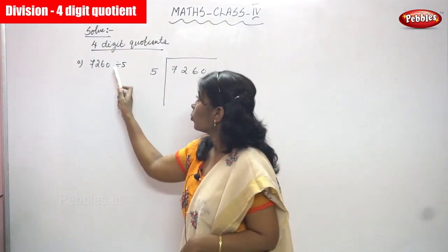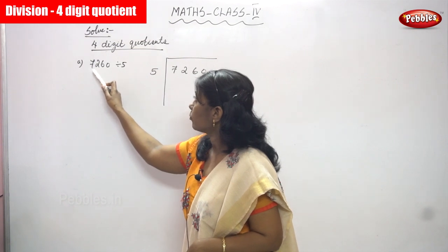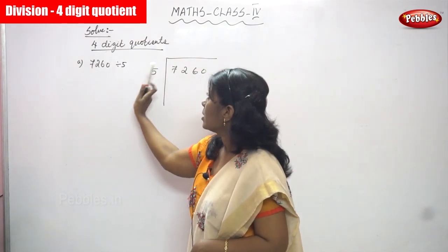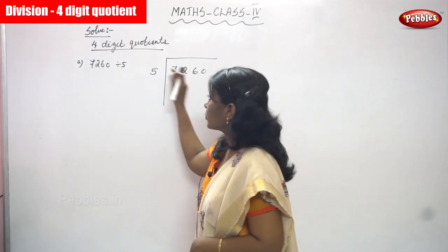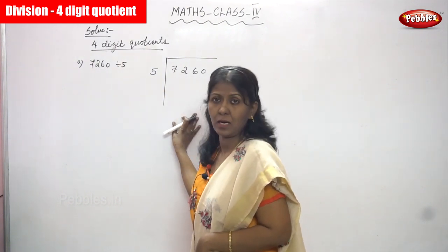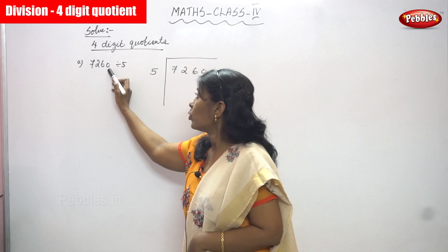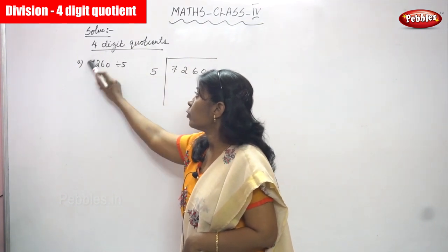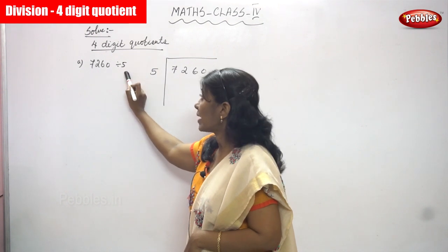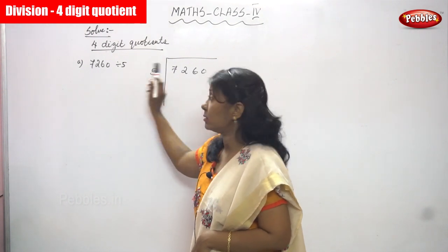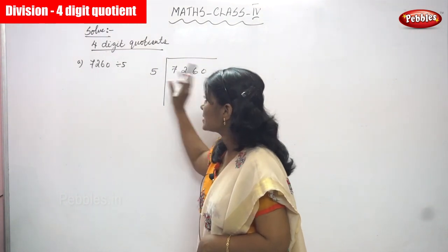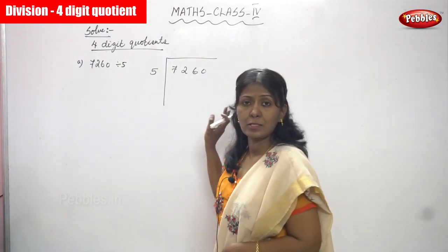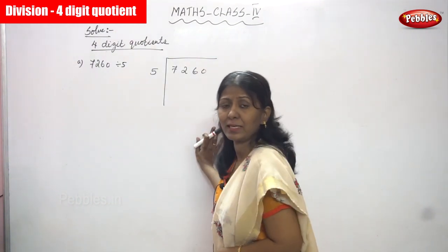Four-digit means 1, 2, 3, 4. A four-digit number divided by 5 will give a four-digit quotient. This is a four-digit dividend and this 5 is the divisor. If you divide this number, you can get the answer as a four-digit quotient. This is the sum we are going to solve right now.